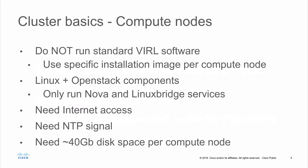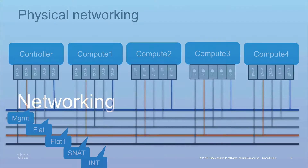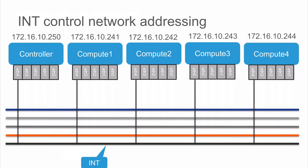Now let's take a look at the networking elements. We need to provide connectivity between all of the various devices — the controller and up to four compute nodes. We have several networks available: the management network, which is how we communicate directly to each device, then flat, flat one, SNAT, and INT. The INT network becomes vitally important when working with OpenStack clusters.